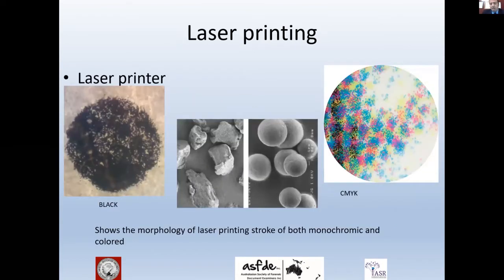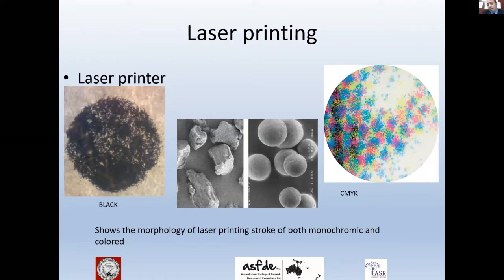Under high magnification, laser printing shows distinct morphology. This picture shows the morphology of the laser printing stroke of both monochromic and color printing. In the black monochromic image, there are dusty dots visible at high magnification. Color laser printing shows four colors — CMYK — also as dusty dots.